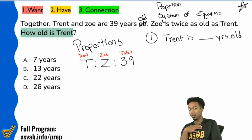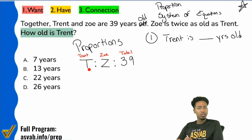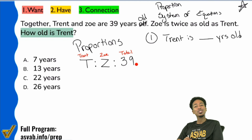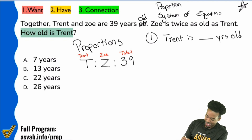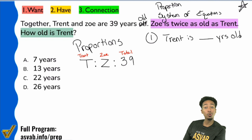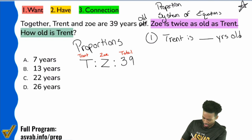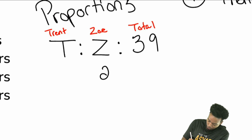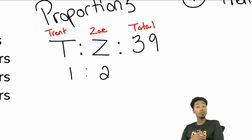I don't know what Trent or Zoe's ages are — it's not given. So I'm just putting a letter for their name: T for Trent, Z for Zoe. The last number represents their total: 39. Now it says Zoe is twice as old as Trent. Since Zoe is double Trent's age, I put a two for Zoe and a one for Trent.